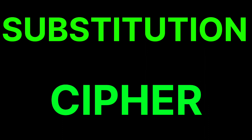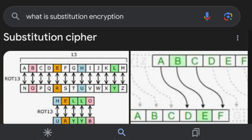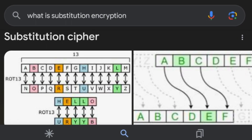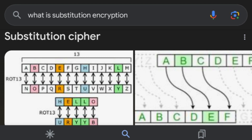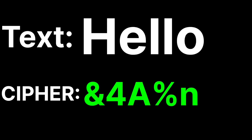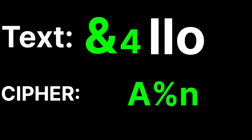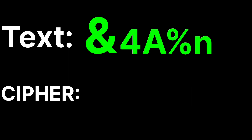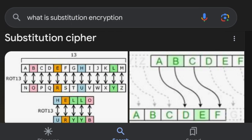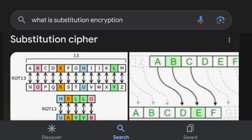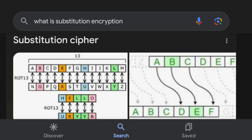What does it mean? According to Wikipedia, in cryptography, a substitution cipher is a method of encrypting in which units of plain text are replaced with the ciphertext in a defined manner with the help of a key. So maybe single letters, pairs of letters, or triplets of letters.